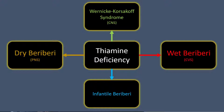At the top we have Wernicke-Korsakoff syndrome, which primarily affects the central nervous system. On the left is dry beriberi, which primarily affects the peripheral nervous system. On the right is wet beriberi, which affects the cardiovascular system. And at the bottom is infantile beriberi. Of these four, Wernicke-Korsakoff syndrome is by far the most important and most frequently tested.